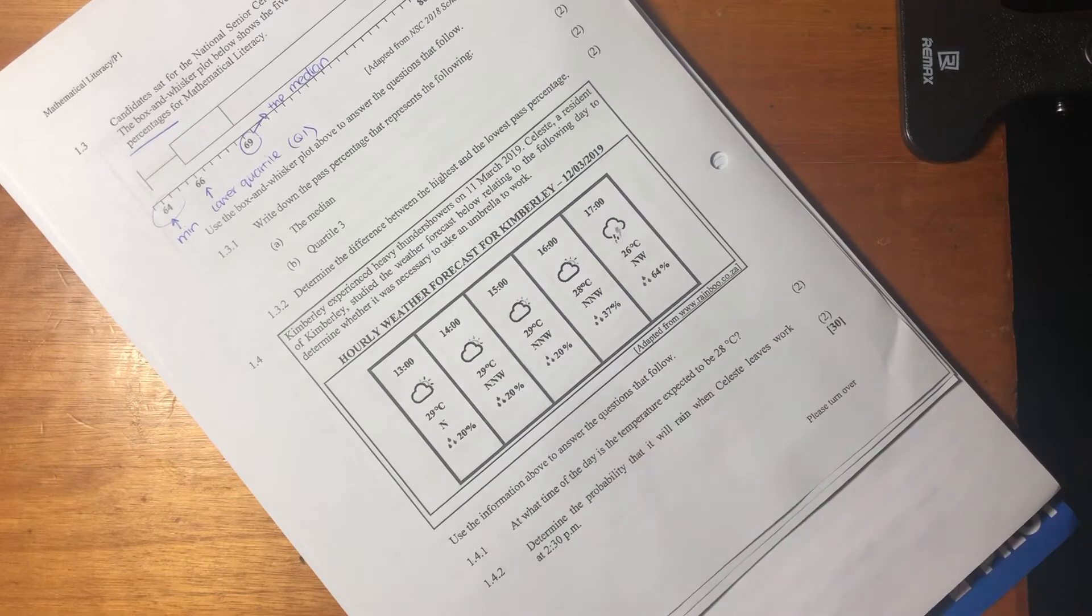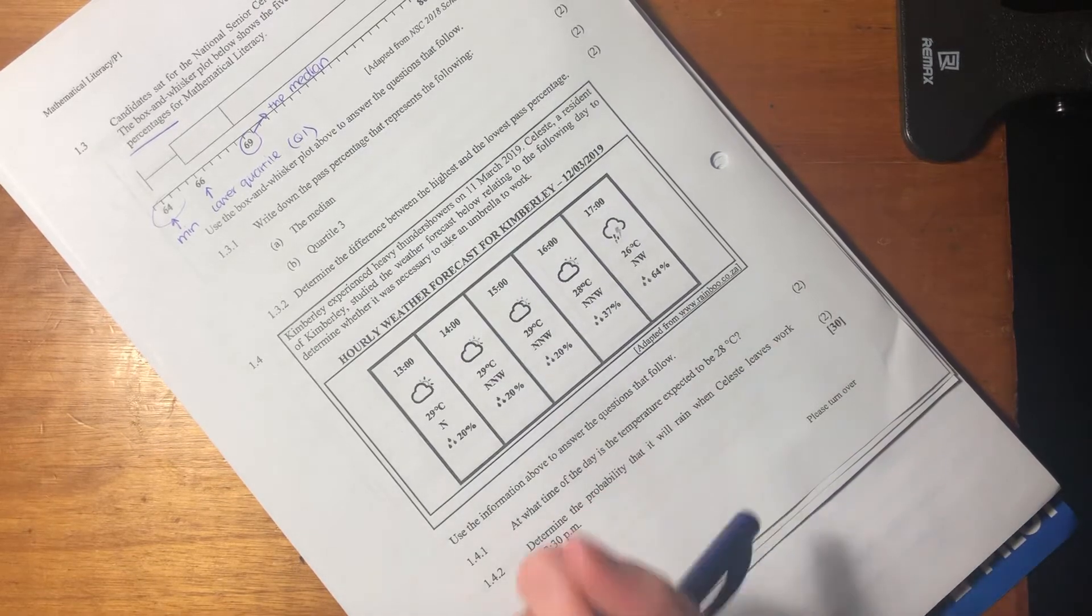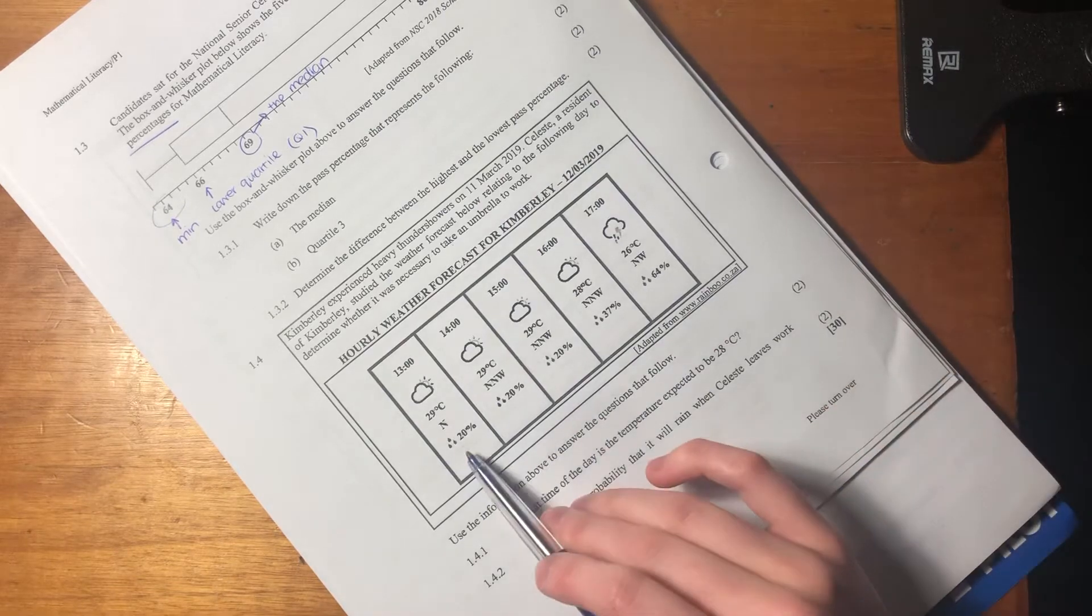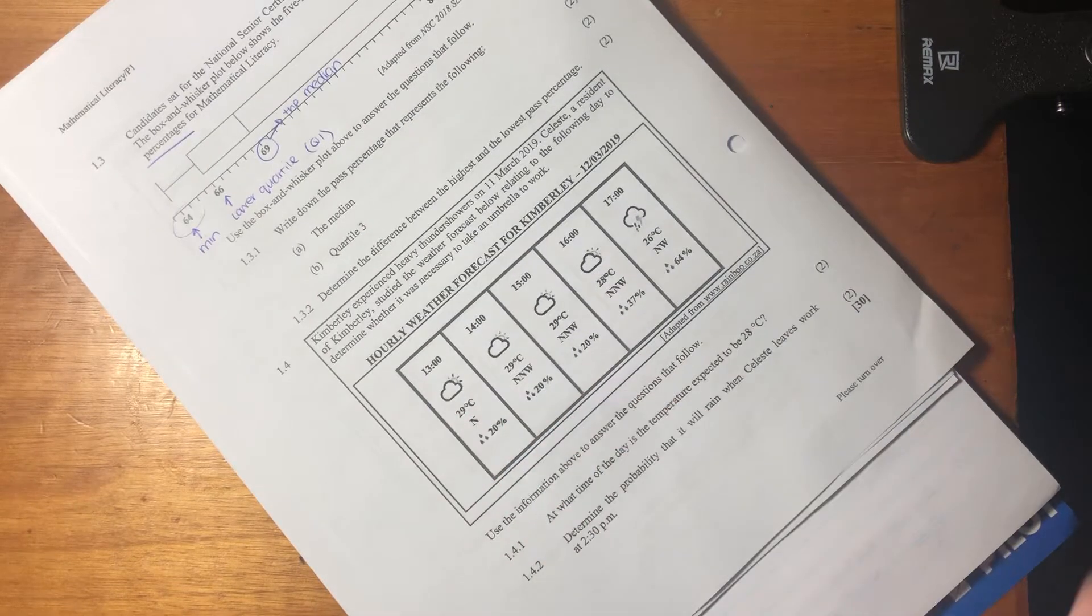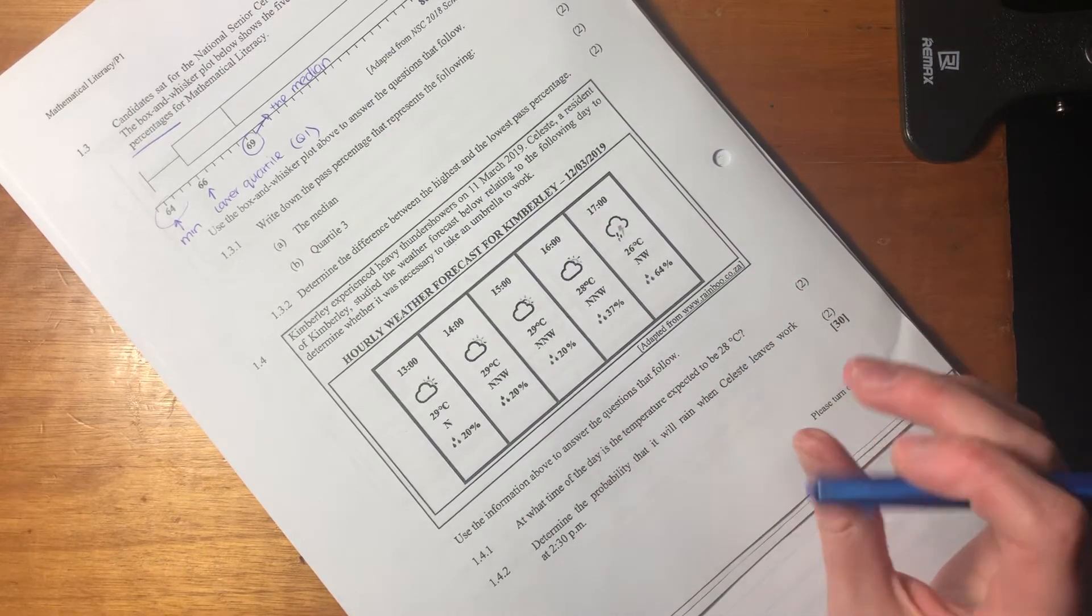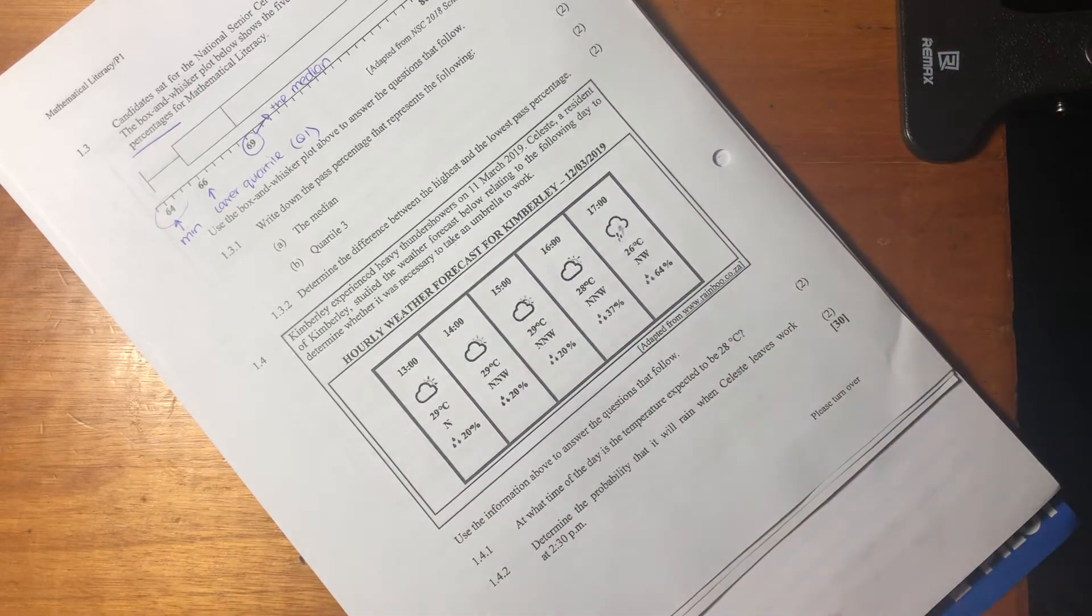And then we have this percentage probability that it's going to rain, right? Remember, probability just indicates how likely something is. So at 20%, it's not too much of a chance that it's going to rain, but at 64%, it's probably going to rain, right? So let's go and do the questions now.